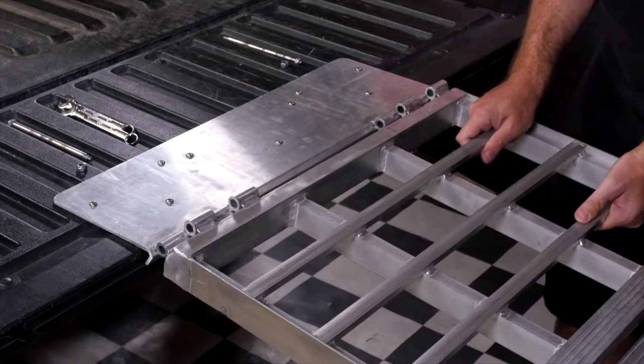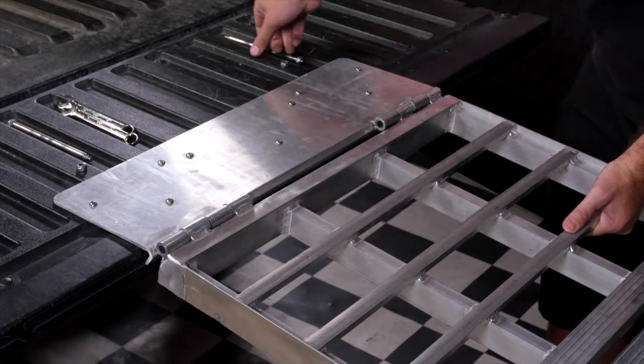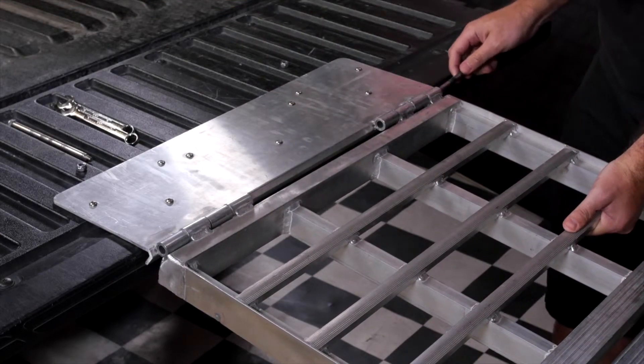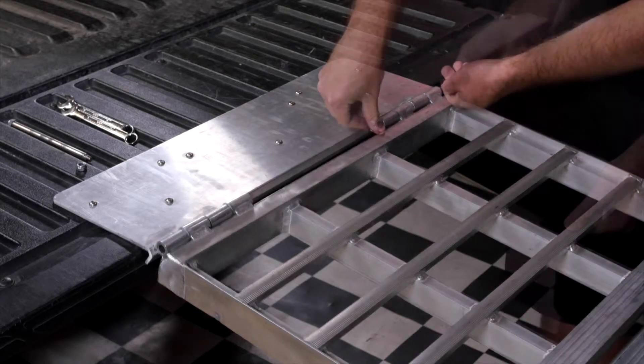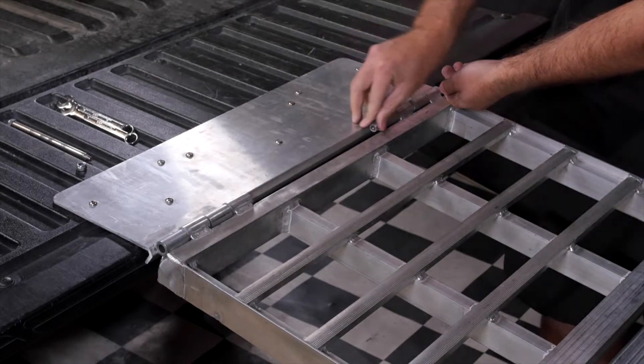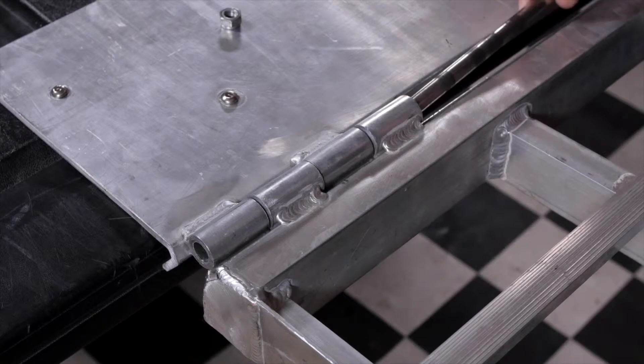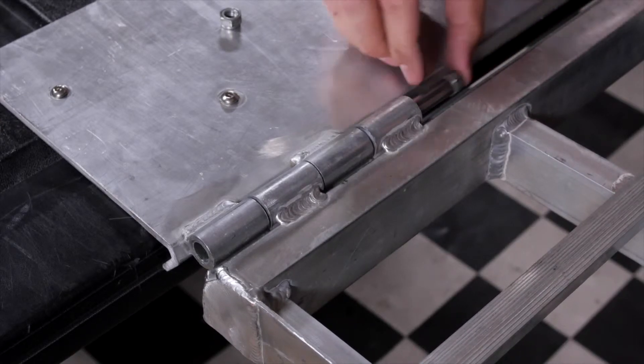To reattach, line the shark cage back in place, then insert one pin into the hinge and secure with the lock nut. Then, reinstall the second pin into the hinge and install the second lock nut.